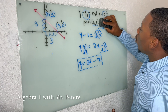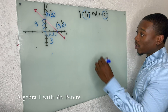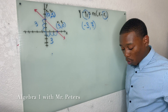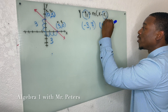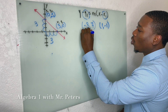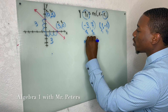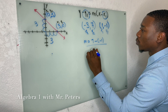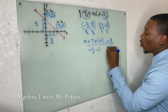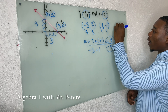I want to show another problem where they don't give us the slope — instead they give us 2 points. We need to find the slope first. Once we use the slope formula, we're going to get 8 over negative 4. Always check to see if we can simplify the slope. We can, so m equals negative 2.